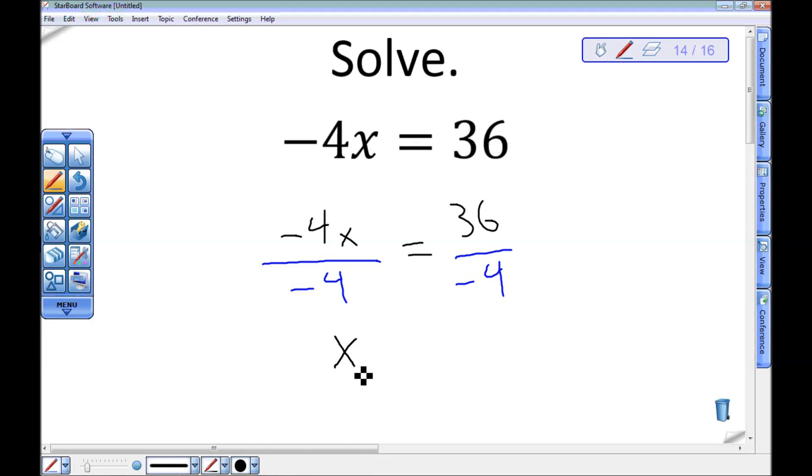So this side of my equation will just be x, and 36 divided by negative 4 is negative 9. I can verify that on my calculator or by looking back at my multiplication charts.